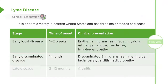In early disseminated disease, which may happen about a month after the tick bite, patients may have a disseminated erythema chronicum migrans rash, as well as meningitis, perhaps a facial palsy, carditis — which usually presents as a prolonged PR interval or a heart block — and then radiculopathy, which is a rare finding in the U.S. although it's more common in Europe.